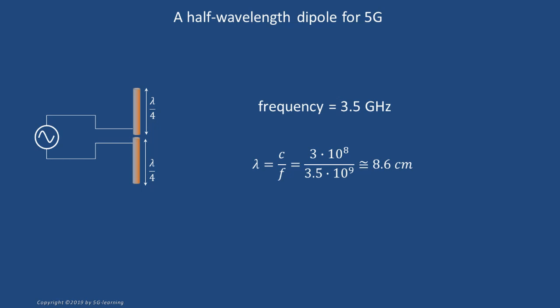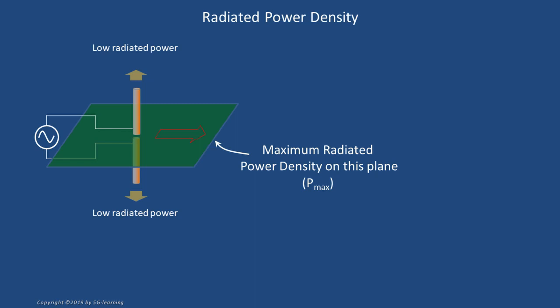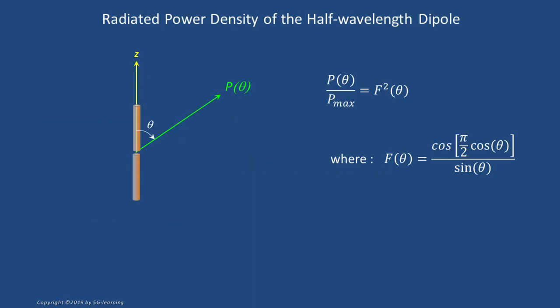Therefore, a half-wavelength dipole for this band will be rather short, just around 4 centimeters total length. The power flux distribution in a given direction is called radiated power density. It is measured in watts per square meter. Using electromagnetic theory, it may be demonstrated that the energy radiated by a dipole reaches its maximum on the plane perpendicular to the antenna axis at its midpoint. Besides, the points laying on the antenna axis receive minimum power. Quantitatively, the radiated power density dependency on the elevation angle θ is given by the expressions displayed on the screen.